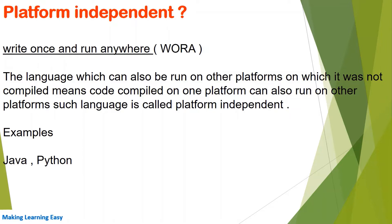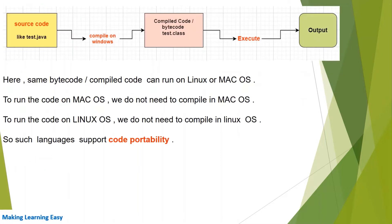A language or code which can also be run on a platform other than the one it was compiled on — meaning the code compiled on one platform can also run on another platform — is called a platform-independent programming language. Famous examples of such languages are Java and Python.